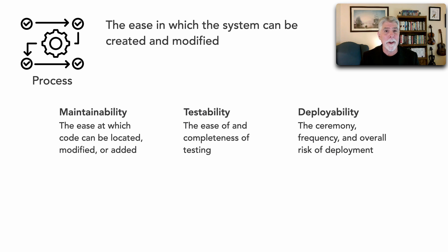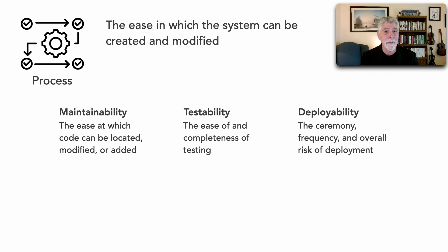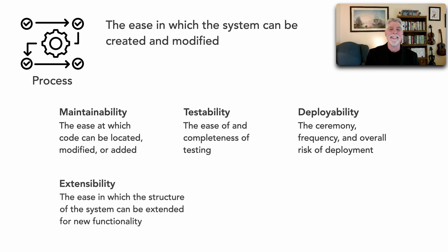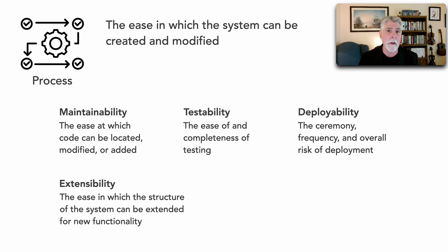There are certain architecture styles that have low ratings of deployability. Most monoliths have low deployability because we have to deploy 100% of that code base. Whereas at the other extreme, like microservices, the ceremony is not much, the frequency is a lot more, and the risk is less — depending on how much the services communicate with each other. Another process characteristic is extensibility: the ease with which the structure of the system can be extended for new functionality. A great example is the microkernel architecture style, otherwise known as the plugin architecture, where additional functionality is simply plugged into the core system.